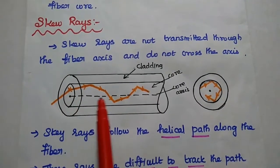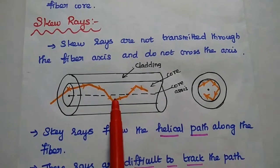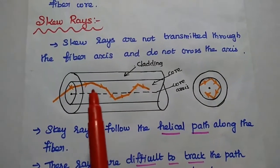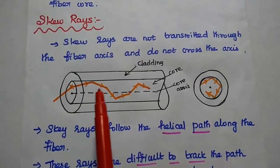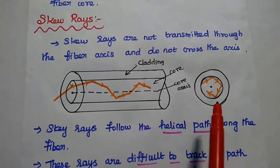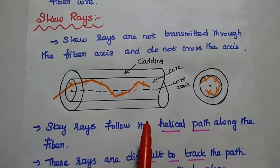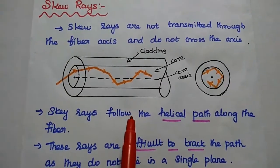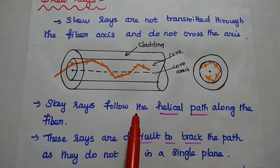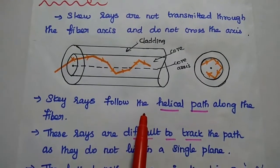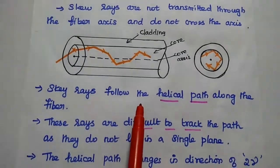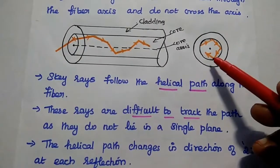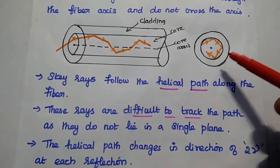Skew rays are not transmitted through the fiber axis and do not cross the axis at each reflection. The skew rays follow a helical path along the fiber. These rays are difficult to track since they do not lie on a single plane. The helical path changes in a direction of two gamma values.